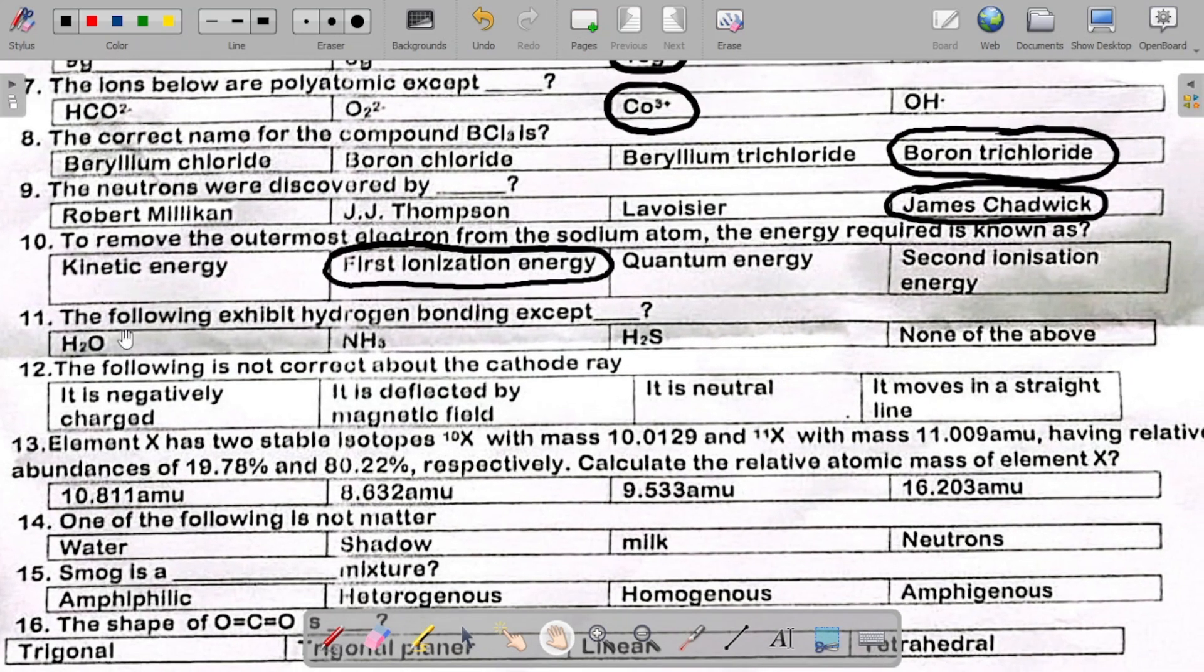Number 11 says the following exhibits hydrogen bonding except. Which of these does not exhibit hydrogen bonding? The answer here is hydrogen sulfide. Note that water exhibits hydrogen bonding. Also, ammonia also exhibits hydrogen bonding, but hydrogen sulfide, H2S, does not exhibit that.